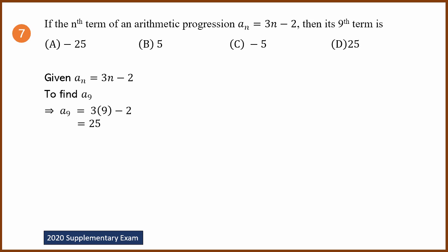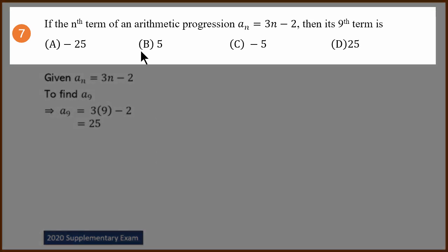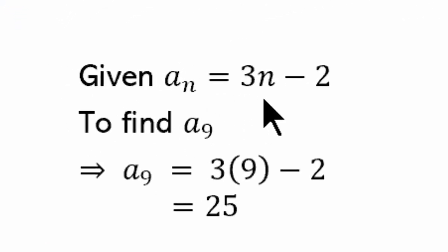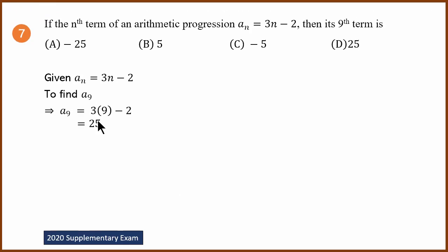Questions 7, 8, 9, 10 are easy questions but very common. The nth term of an arithmetic progression is An equals 3n minus 2. What is the 9th term? Substitute the formula. An is 3n minus 2. A9 is 3 times 9 minus 2, which is 27 minus 2, equals 25. The answer is D.